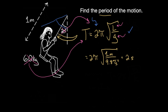To recap: the period of a pendulum depends on the length of the pendulum and the surface gravity of the planet you're on. It does not depend on the amplitude or the mass of the pendulum. The form is very similar to the period of a mass on a spring, where the numerator increases due to increased inertia and the denominator increases due to increased restoring force.